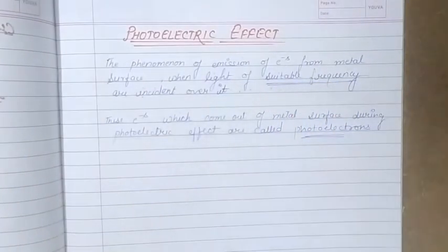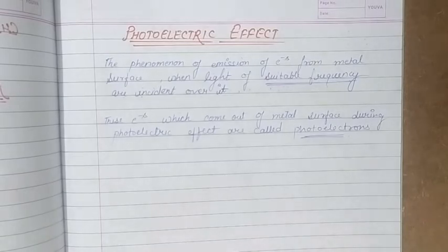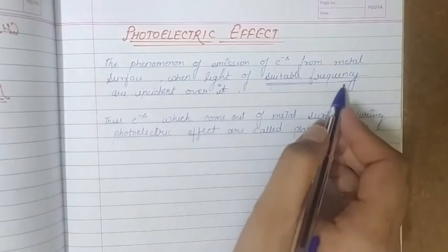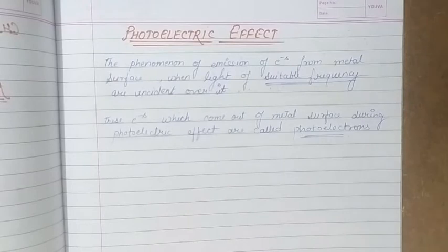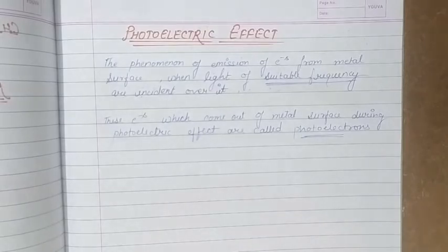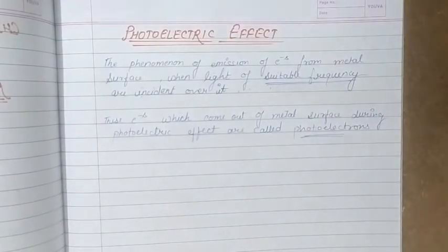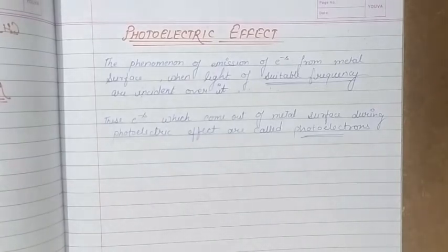The phrase 'light of suitable frequency' is important — not every light is capable of showing photoelectric effect. There is a certain frequency for every metal, and the minimum value of frequency required by a metal to show photoelectric effect is called the threshold frequency. Every metal has its own threshold frequency. At or above that frequency, it starts showing photoelectric effect; below that frequency, the energy is not sufficient for electrons to come out.